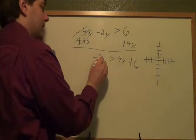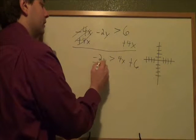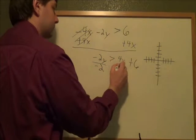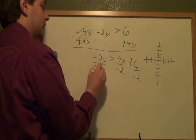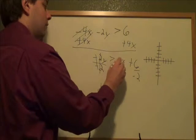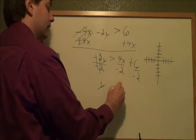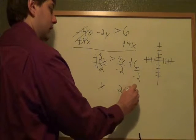If you still want to get y by itself, we need to get rid of this minus 2 now. To get rid of something that's multiplied by y, you divide by it. Negative 2y divided by negative 2 just leaves you with y. 4x divided by negative 2 is negative 2x. 6 divided by negative 2 is negative 3.